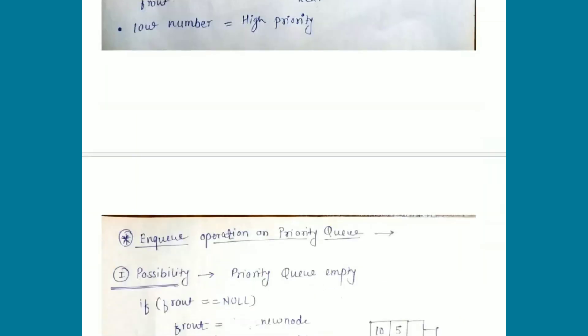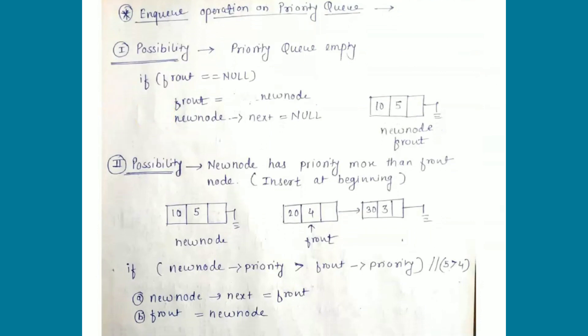Now we will discuss how to perform the enqueue operation on a priority queue. There are three possibilities. The first is when the priority queue is empty. You check if front is null — if so, the queue is empty. The new node becomes the front and we set its next to null. So a node with data 10 and priority 5 is added as the front.